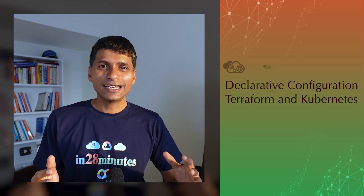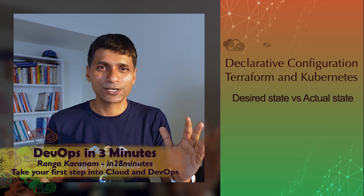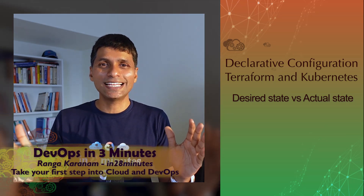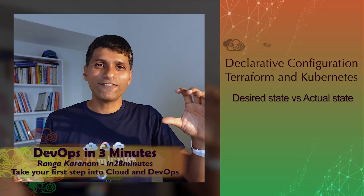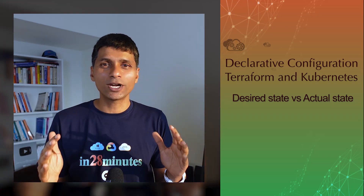You hear the term 'declarative' or 'declarative configuration' a number of times, often in the context of Terraform and Kubernetes. What does that mean? Let's consider an example: the current state is I have five instances of a specific microservice, and the desired state is I would want to have 15 instances — so currently five, and I want to increase it to 15.